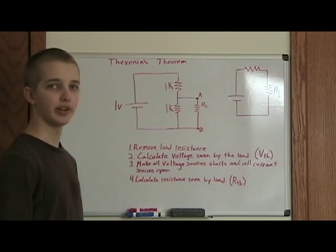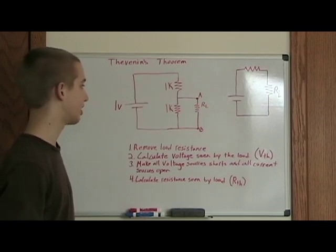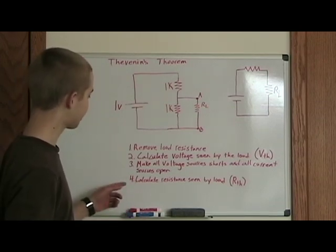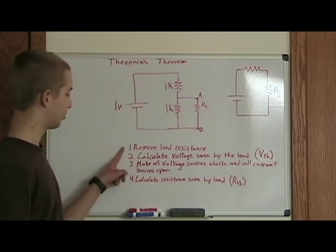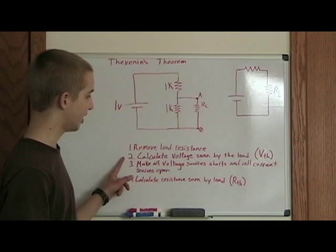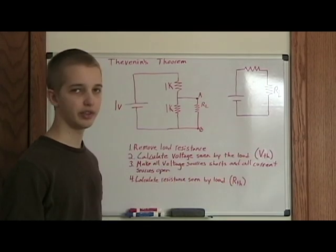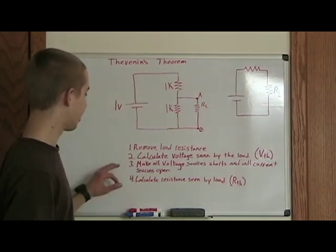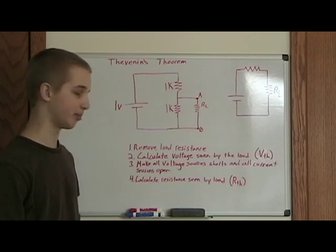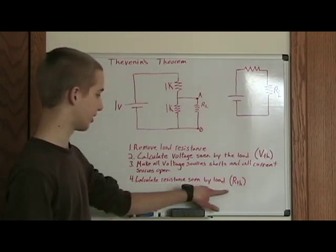To simplify a circuit with voltage sources, current sources, and resistors, you have to follow these four rules. One is remove the load resistance. Two is calculate the voltage seen by the load, which is commonly denoted VTH for Thevenin's voltage. Then you have to make all voltage sources shorts and all current sources open. And the last step is to calculate the resistance seen by the load.